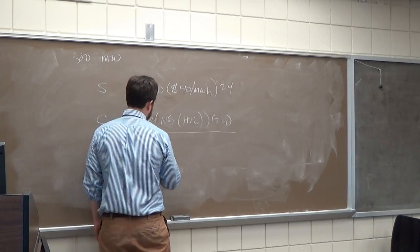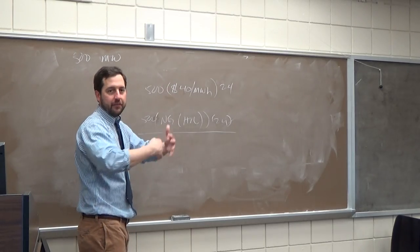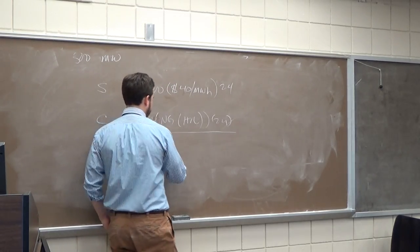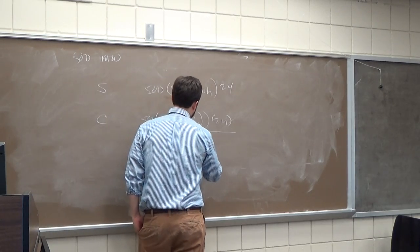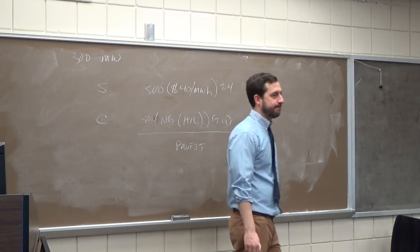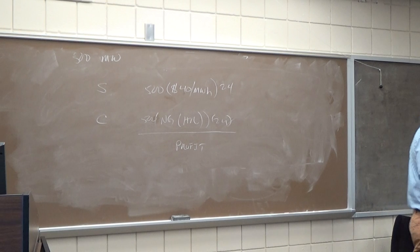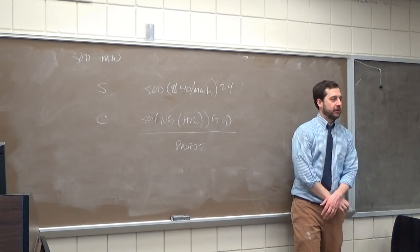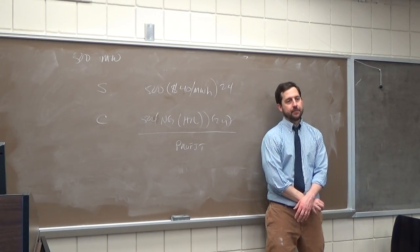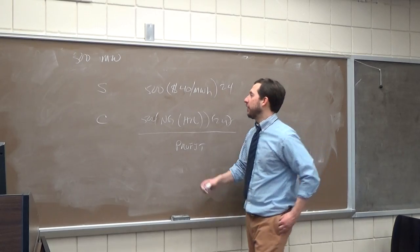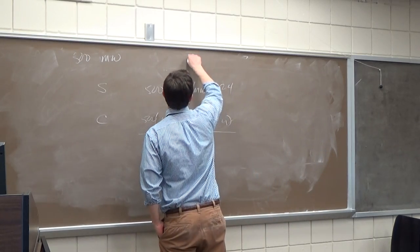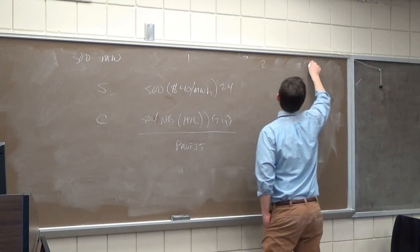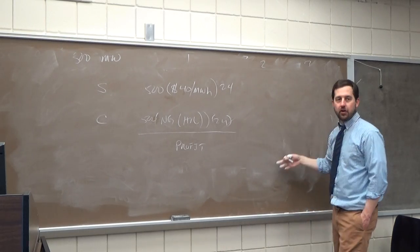So we have sales minus cost, and then we get some sort of gross profit. This is just a very simple, without including other fees and so forth, we can just take the difference between these two, and that's our profit. So if we do this for every day, we say this is day one, day two, day three, and so forth, then we can get our cash flow per day.